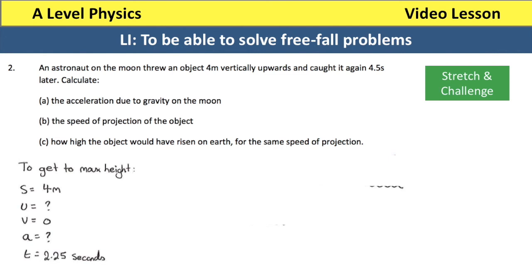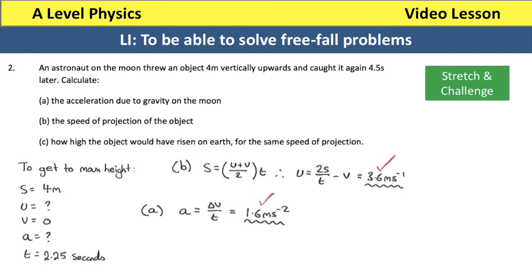It's actually easier to do part B first to work out the speed of projection. Rearranging the equation, the speed of projection is 3.6 metres per second. Now going back to part A to work out the acceleration: using V equals U plus AT, rearranging gives the acceleration due to gravity on the Moon as 1.6 metres per second squared.